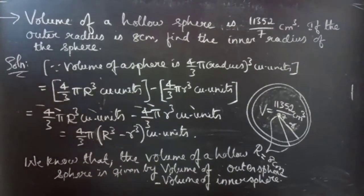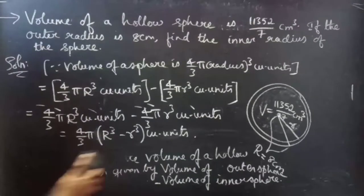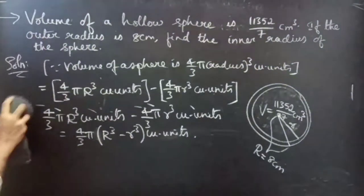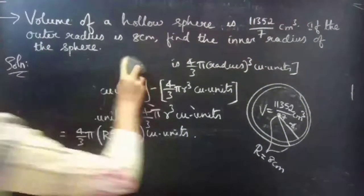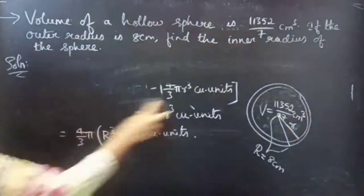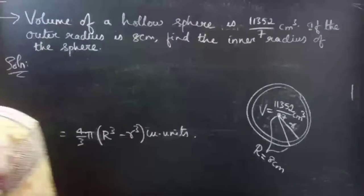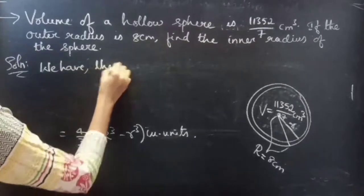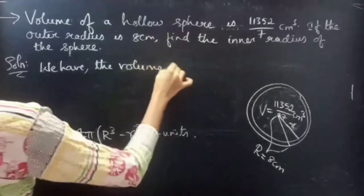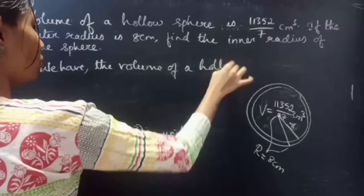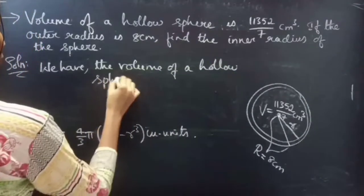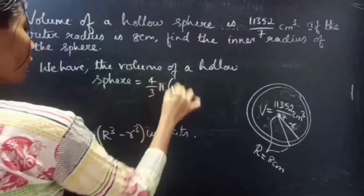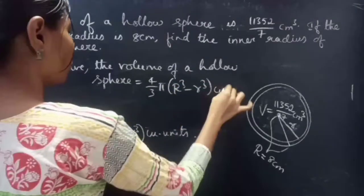So the formula for volume of a hollow sphere is 4/3 π into (capital R cubed minus small r cubed) cubic units.